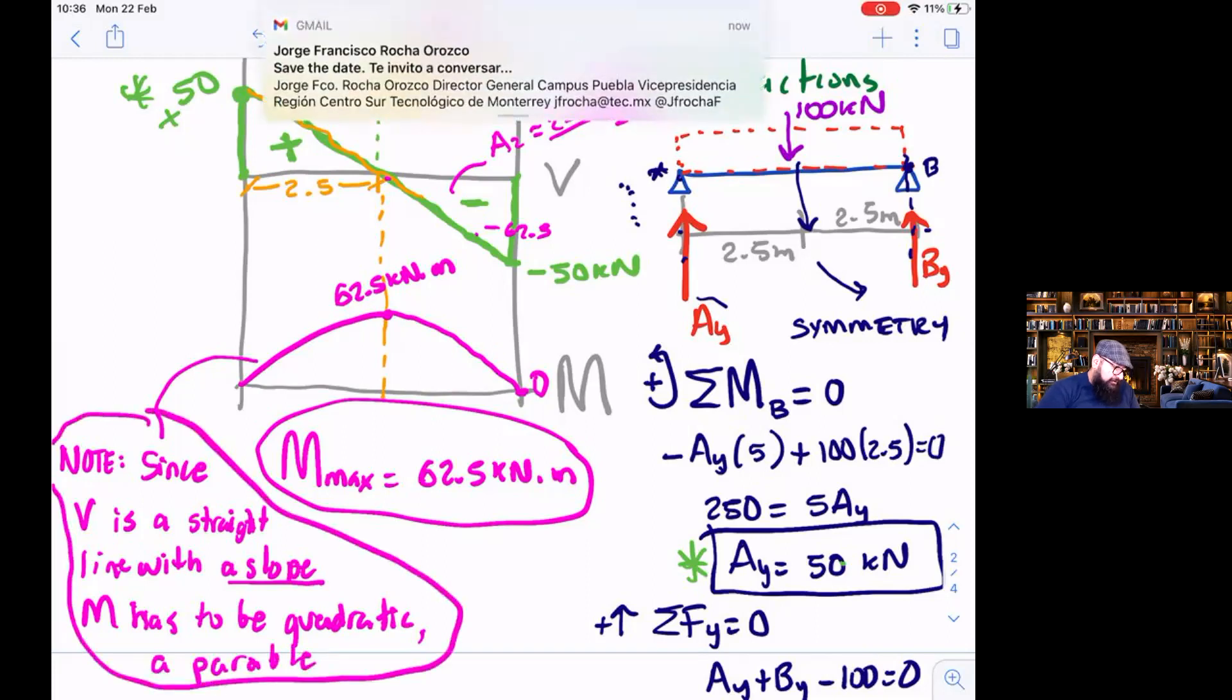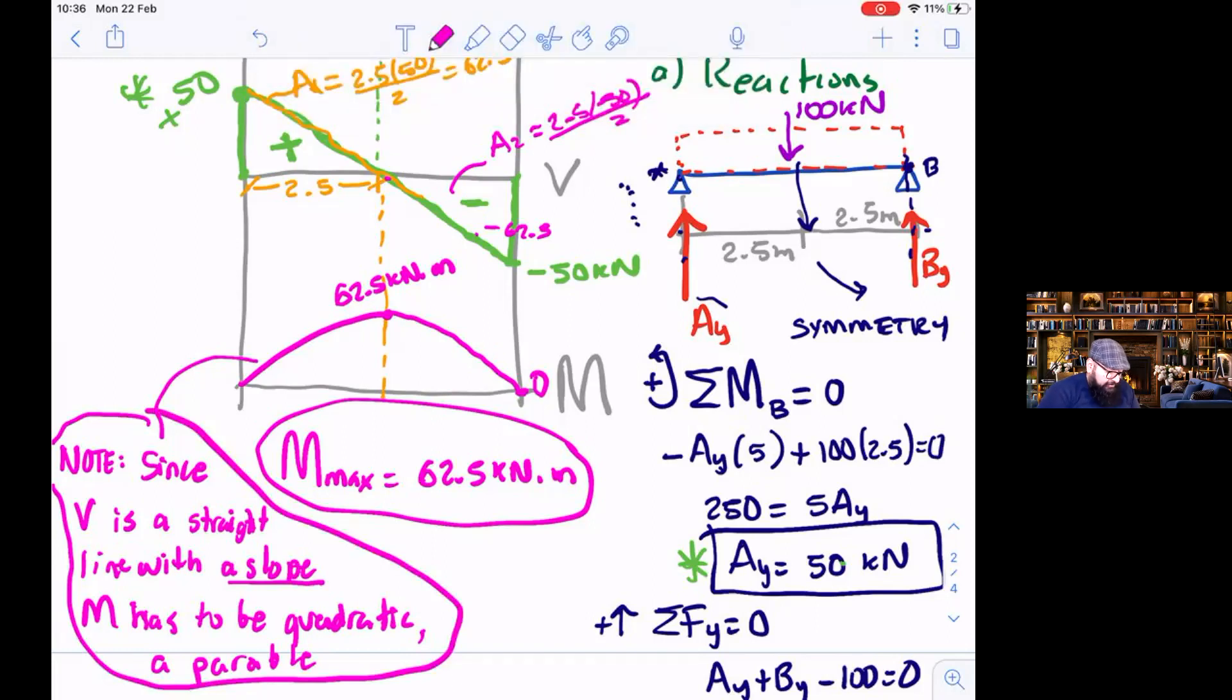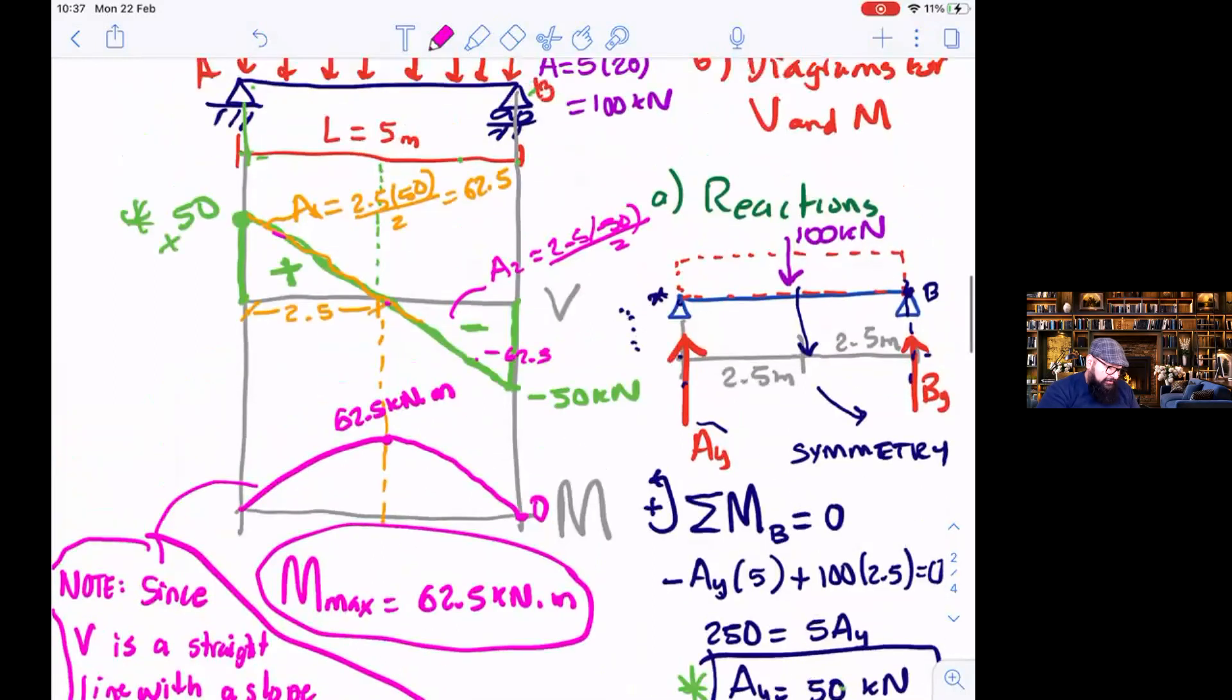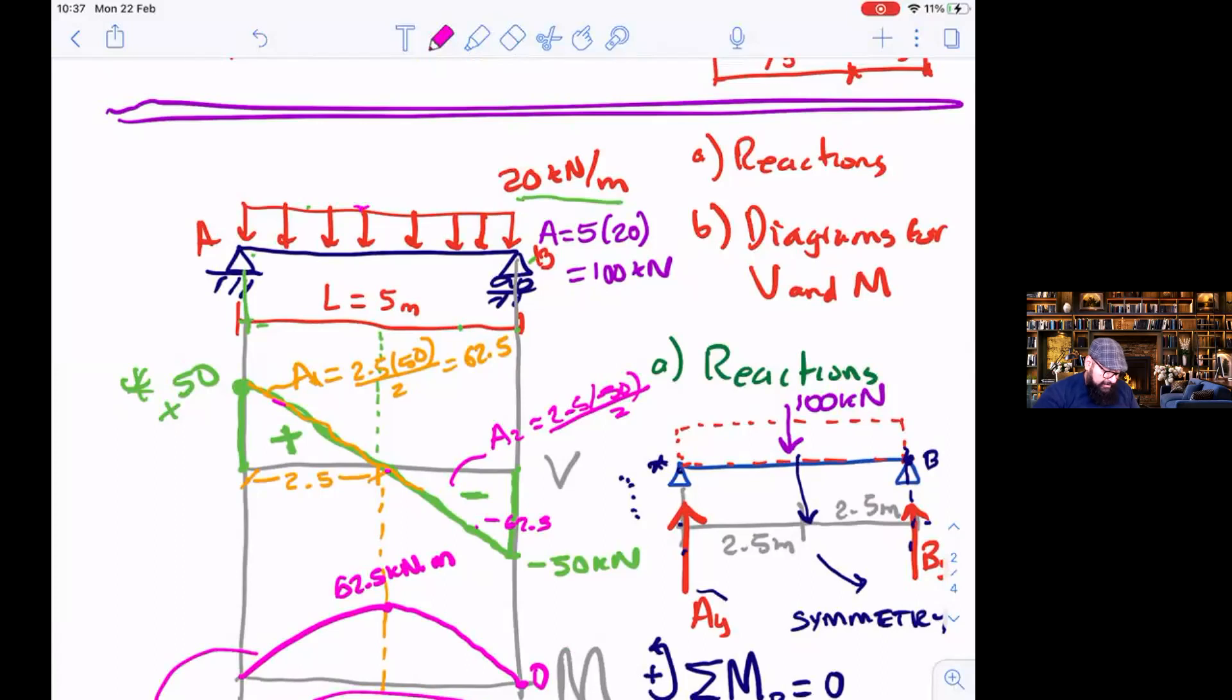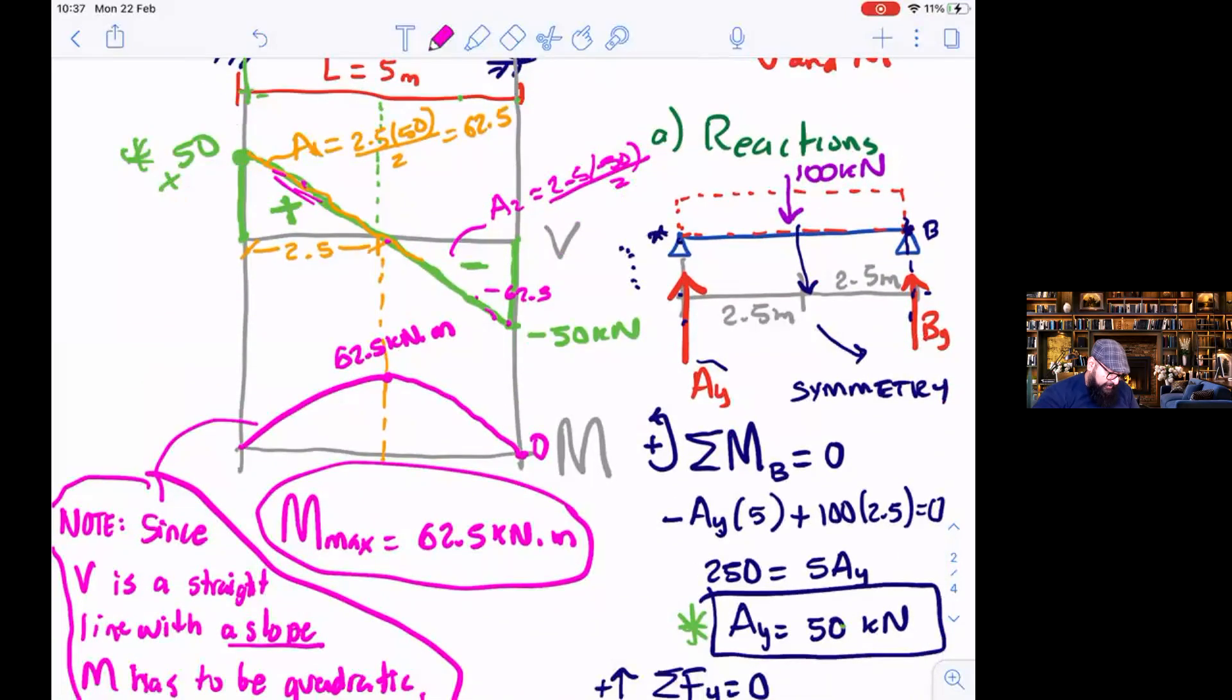This note is saying since V is una línea recta con pendiente, it's a straight line with a slope, M, moment, has to be quadratic because the moment is always one order above the shear force. When we have distributed loads like this one that are uniform, the shear force is always going to be like this, an inclined straight line, and the bending moment is going to be a quadratic parabola.